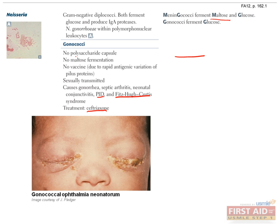Babies born to mothers with gonococcal infections may present with ophthalmia neonatorum during their passage through an infected vaginal canal. This will present as an acute purulent conjunctivitis several days after birth, and is the basis for all newborns receiving prophylactic intraocular antibiotics to prevent gonococcal and chlamydial infections. N. gonorrhoeae is also the number one cause for septic arthritis seen in sexually active adolescents. There is no vaccine because the pili proteins of Neisseria gonorrhoeae undergo such rapid antigenic variation that it is impossible to establish long-lasting immunity.